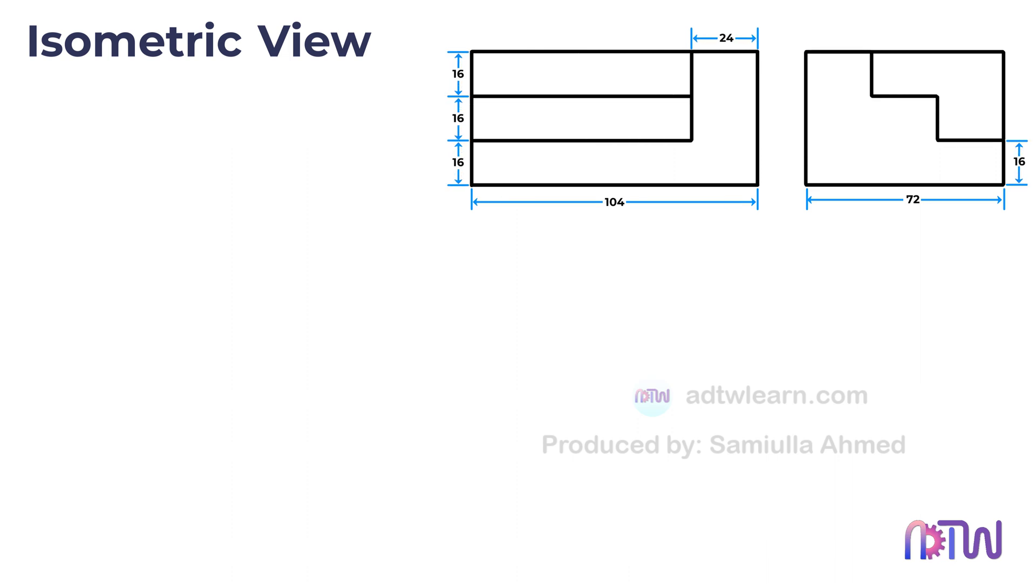These are the orthographic projections of the object. To construct the isometric view or 3D view of the object, we first need to create the isometric axis.